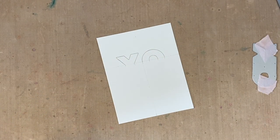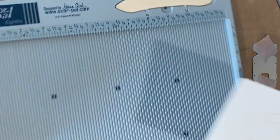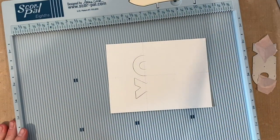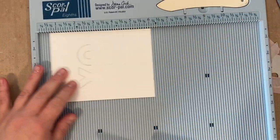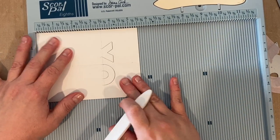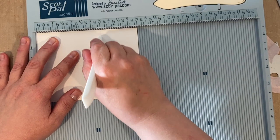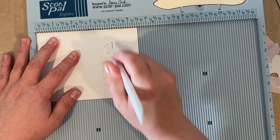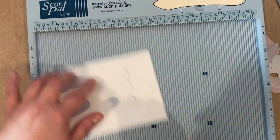So I'm going to grab my scoring board and I'm going to score across that line. Now in retrospect, I really only need to score across the X and across the O, not my whole card panel. So if you make this card, don't do the whole line, just do across the X and across the O so it will fold forward nicely.